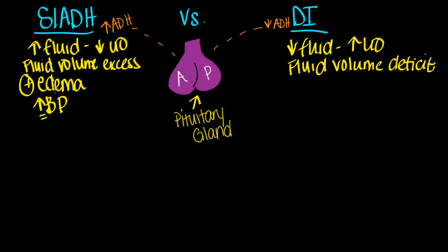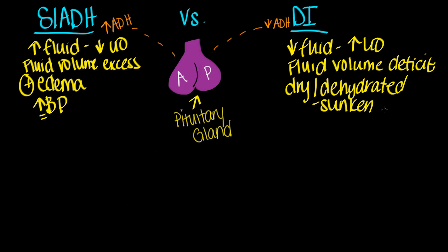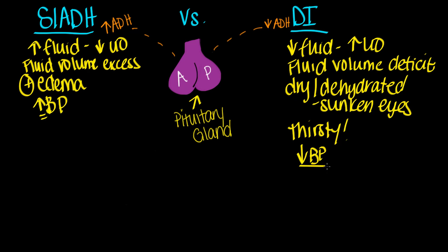In DI, this person is actually going to look dry — dehydrated. You might even notice that they have sunken eyes. They're looking really dried out because they are dumping so much fluid, because the urine output is increased. They're going to be constantly thirsty because they're losing all of this fluid. These are some of the common signs and symptoms we're going to see. Let's compare blood pressure: in SIADH we had increased BP because there's a lot of fluid, but in DI we're going to have decreased BP because we're losing so much of it.